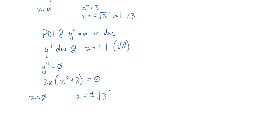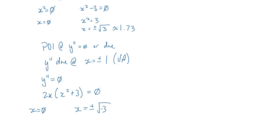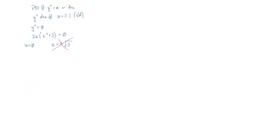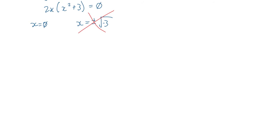For possible points of inflection, y'' = 0 or does not exist. y'' does not exist at x = ±1 (vertical asymptotes — state but don't worry about). Setting y'' = 0: 2x(x² + 3) = 0. Note this is x² + 3, not x² − 3, so x² = −3 has no real solutions. Therefore y'' = 0 only at x = 0. That makes the concavity chart a bit easier.